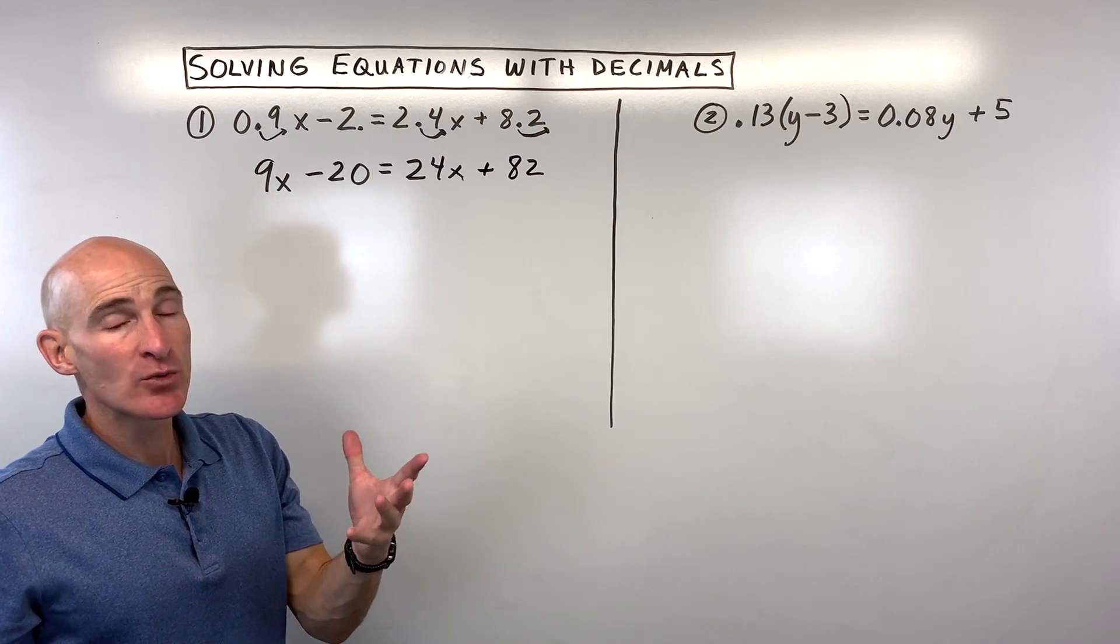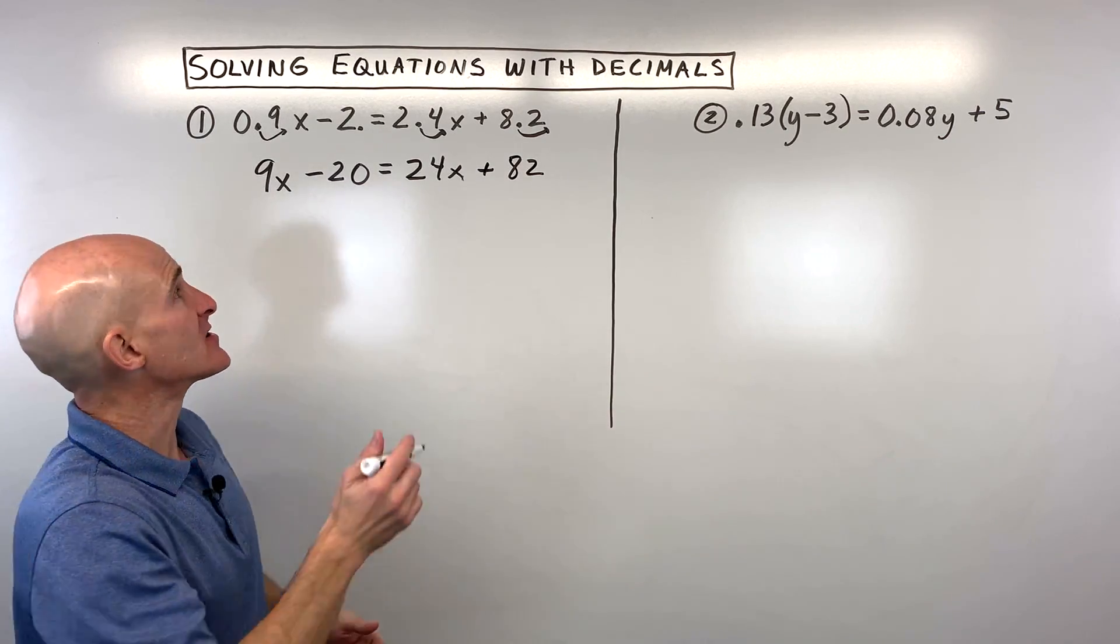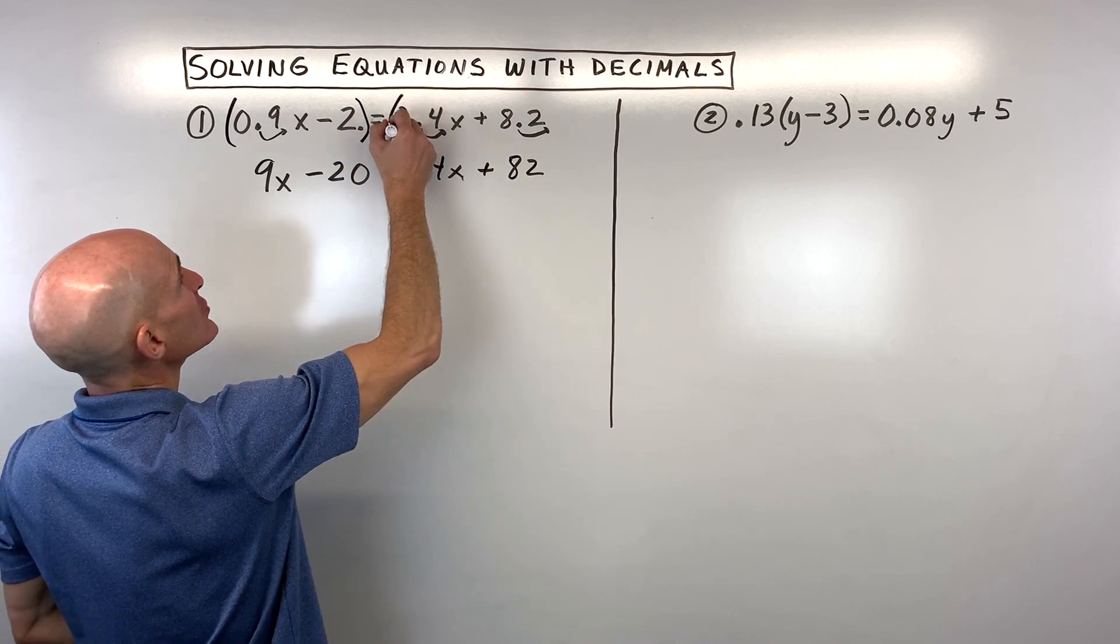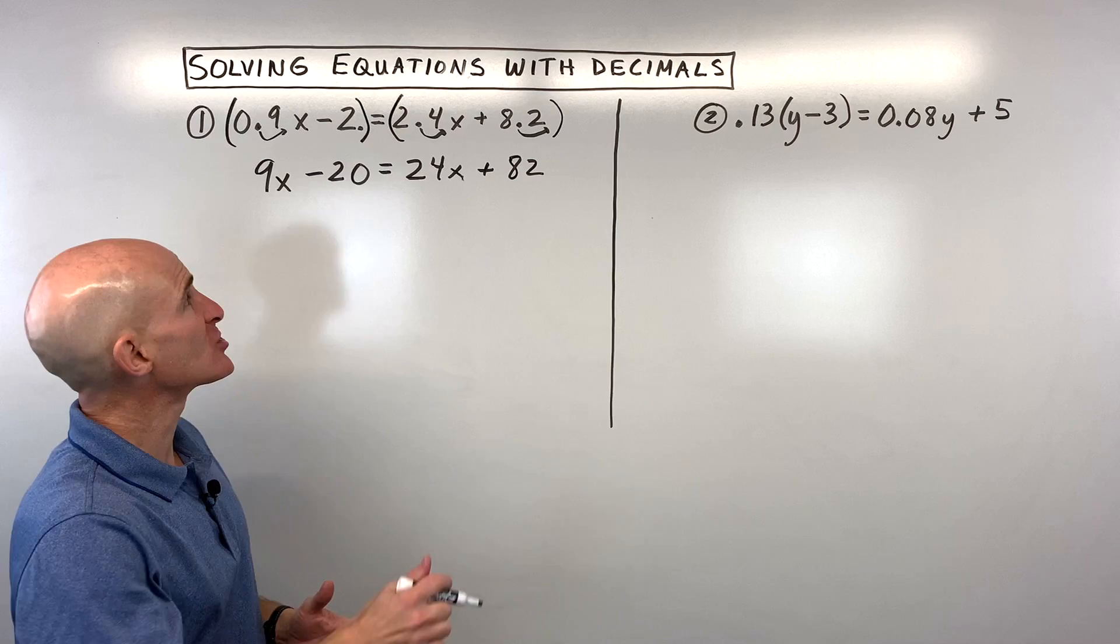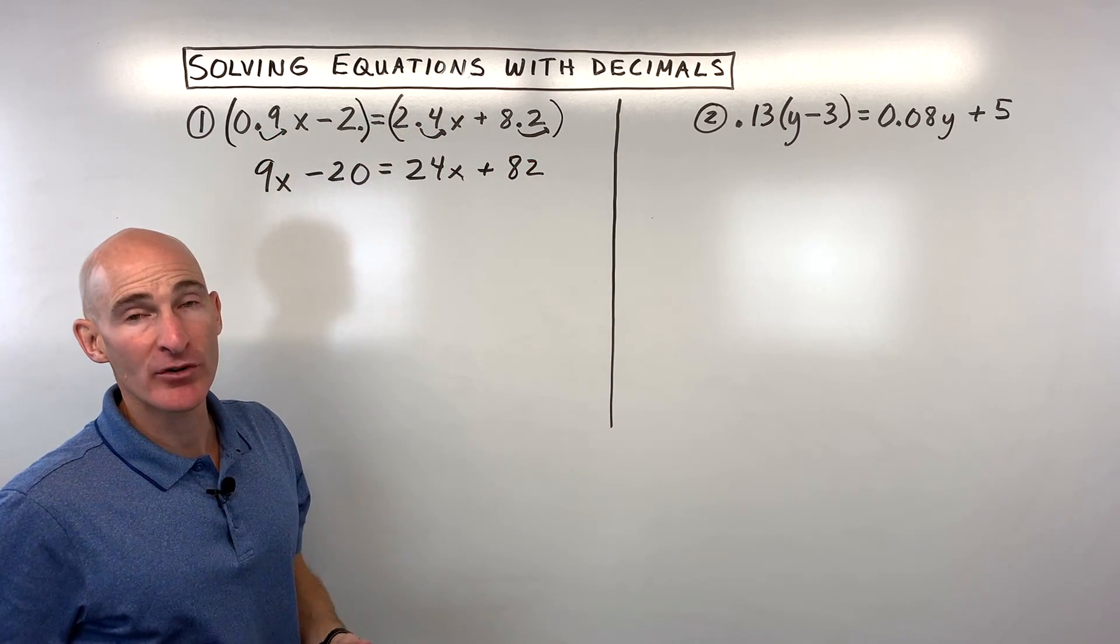Now the reason this works is we're keeping the equation balanced. It's like we're multiplying the left side by 10 and we're also multiplying the right side by 10, so it's keeping the equation balanced. Just make sure you multiply every single term by that number 10.